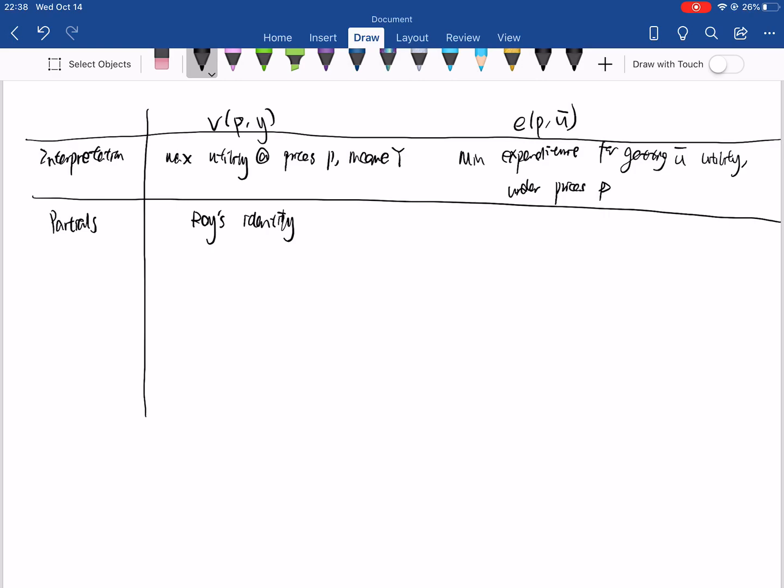More specifically, it says that the negative ratio of the partial of the indirect utility function with respect to prices over the partial of the indirect utility function with respect to income is equal to the Marshallian demand function.